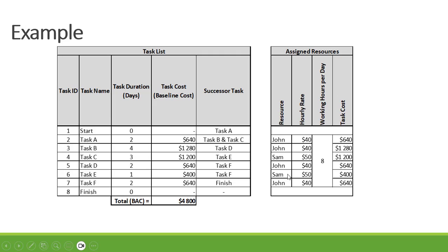Sam is assigned to task E, so it's 50 times 8 = 400, times 1 = $400. And then John is assigned to task F: 40 times 8, times 2 = $640.